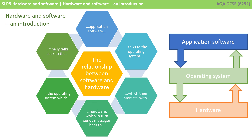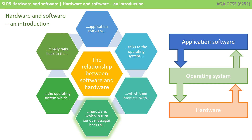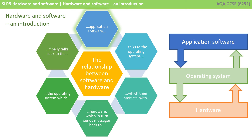It's important to understand the relationship between application software, the operating system, and hardware. Starting at the top of this diagram, application software talks to the operating system. The operating system is then responsible for interacting with the hardware, which in turn sends messages back to the operating system, which finally talks back to the application software. In essence, the operating system sits between the application software and the hardware.